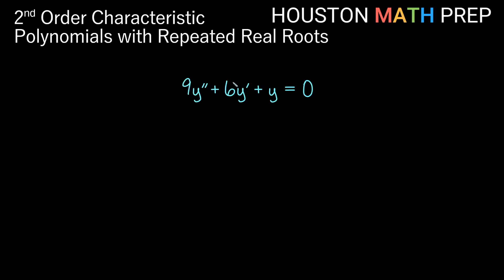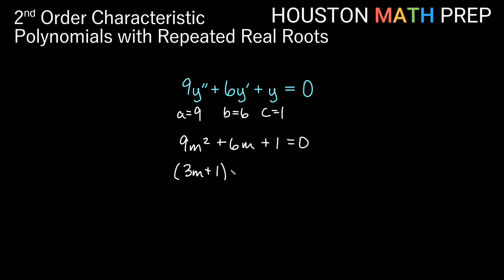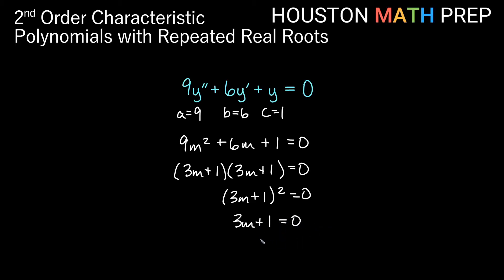Our last example: 9y'' + 6y' + y = 0. Here a = 9, b = 6, c = 1. The characteristic polynomial is 9m² + 6m + 1 = 0, factoring as (3m+1)² = 0. Setting 3m + 1 = 0 and solving gives m = -1/3 with multiplicity 2. The solution is y = c1·e^(-x/3) + c2·x·e^(-x/3).